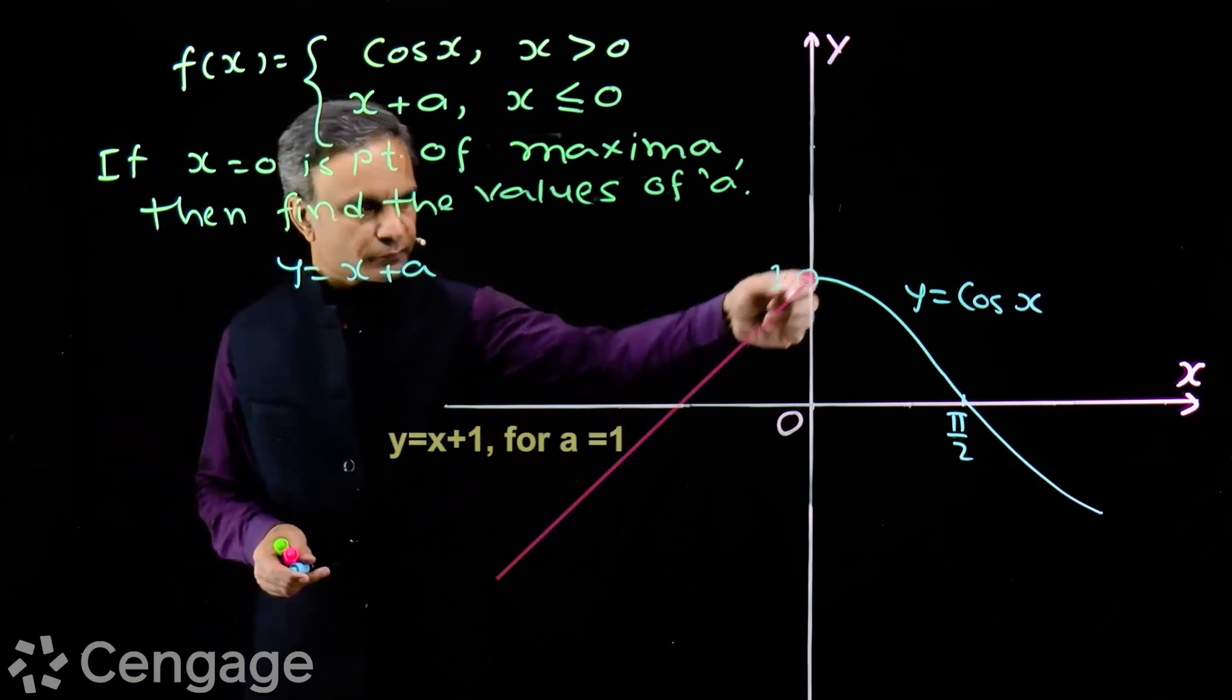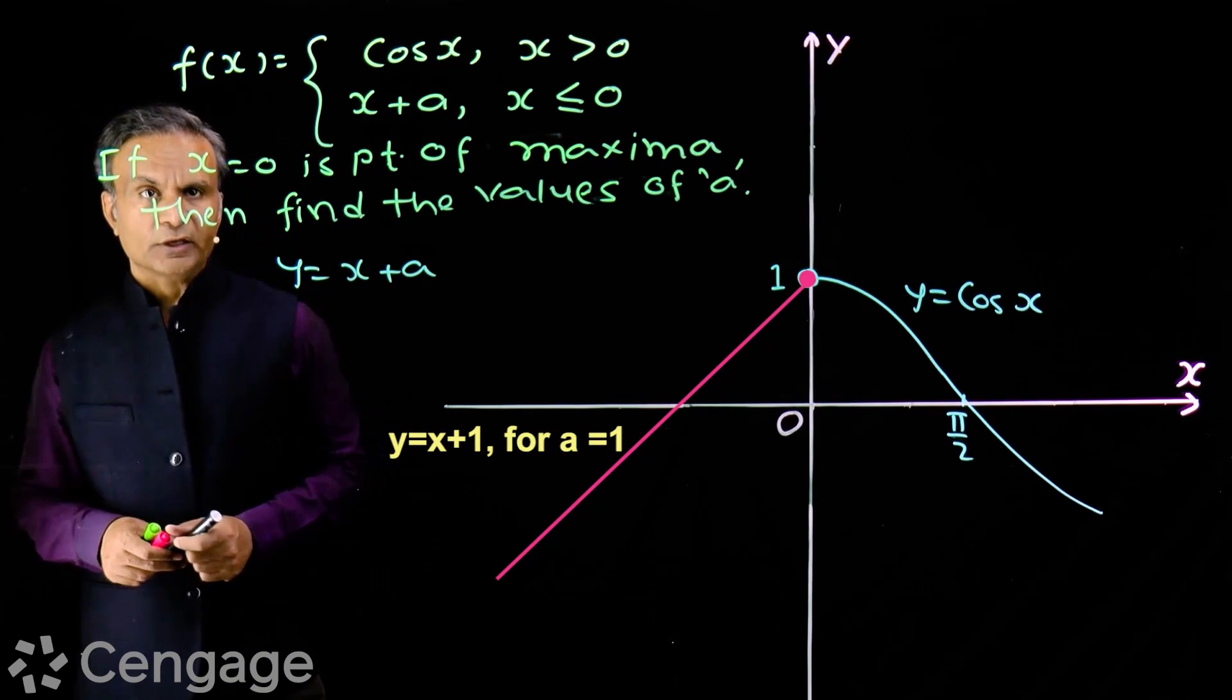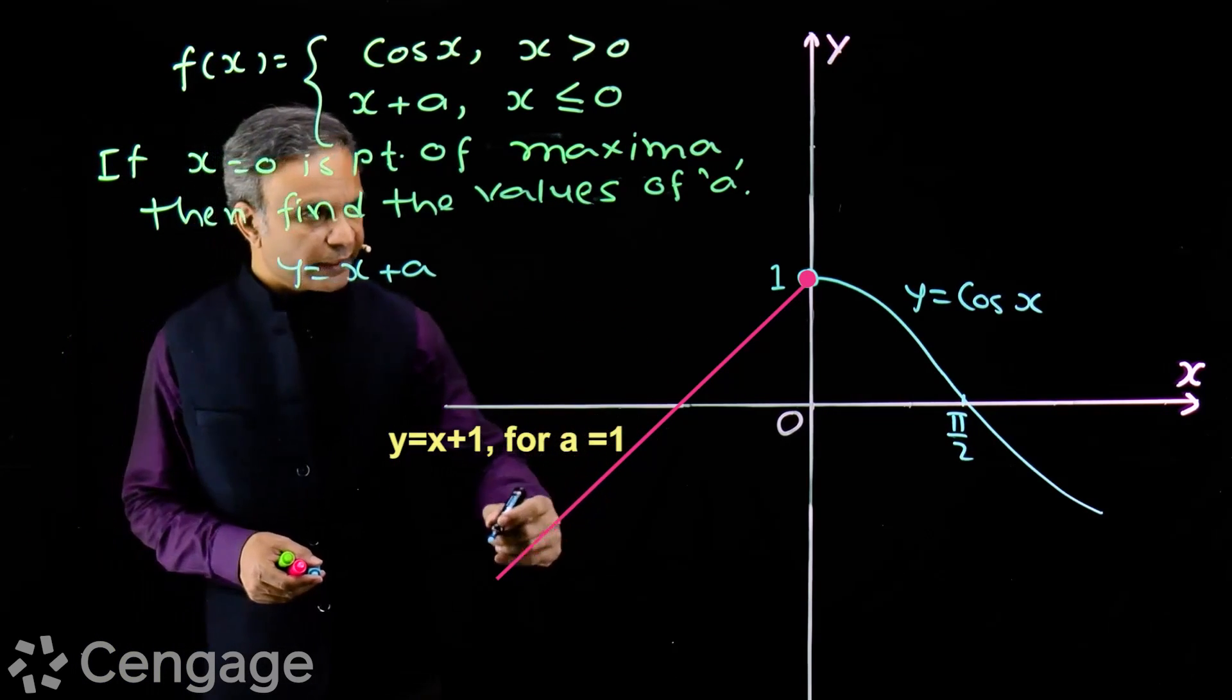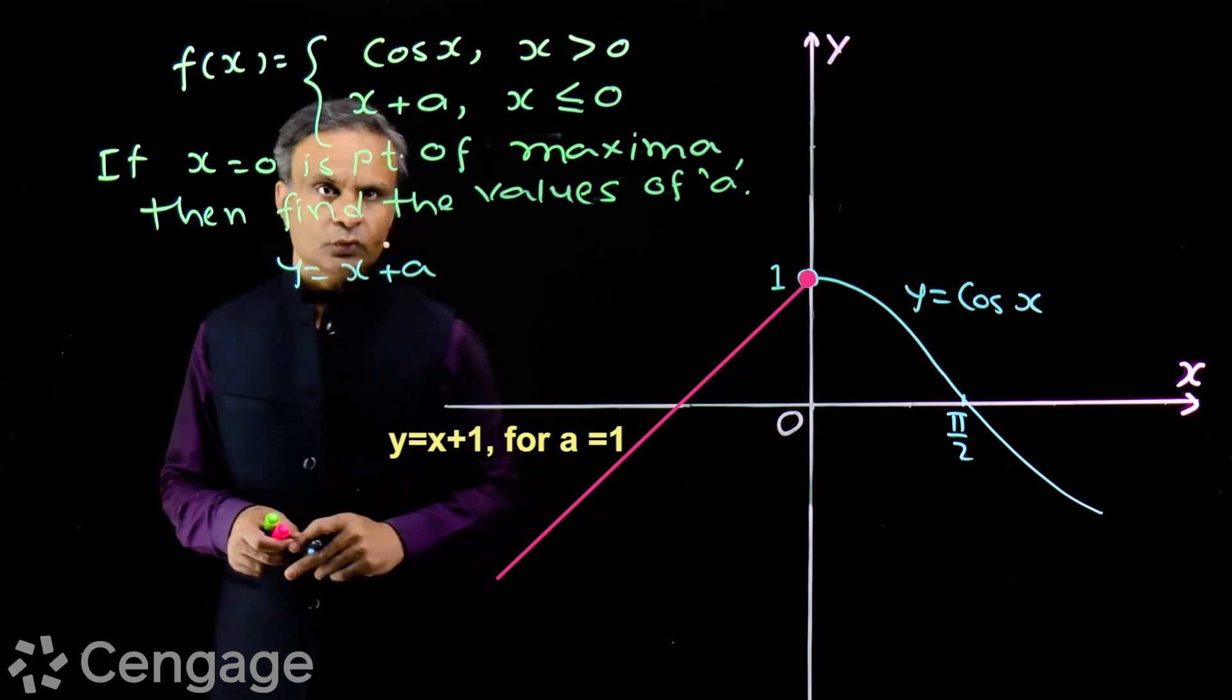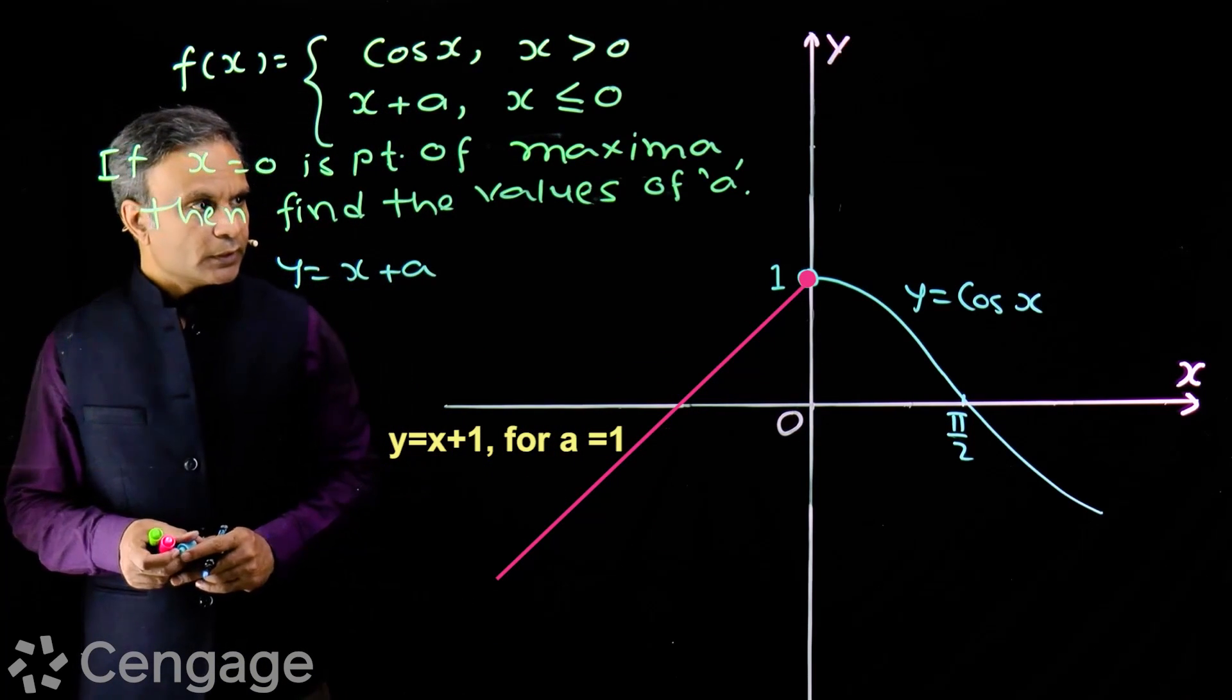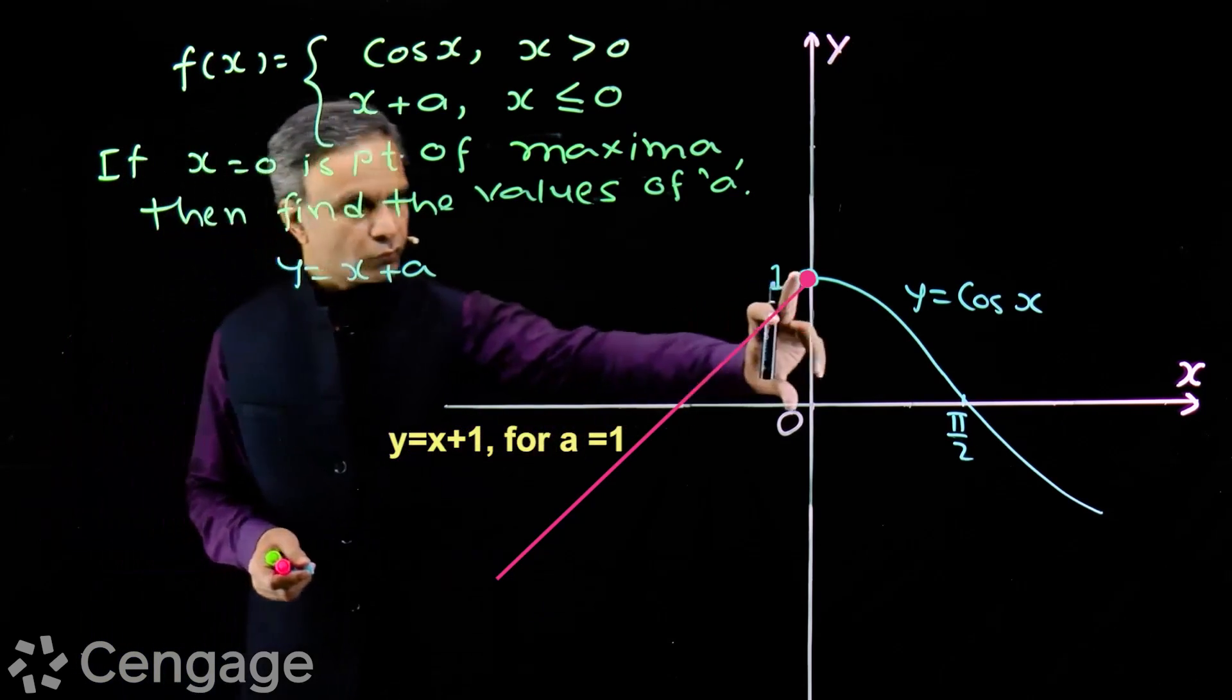So, once we put line like this. For this line, value of a will be 1. If y intercept is 1, then value of a will be 1. So this is line y equals x plus 1, for a equals 1. And clearly, here x equals 0 is point of maxima. At x equals 0, value of function is maximum. In its neighborhood, value is 1.